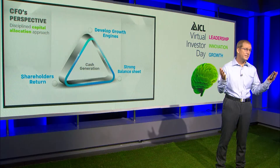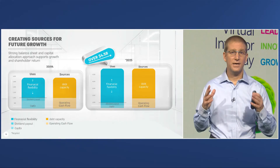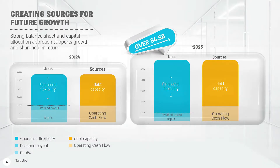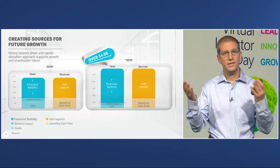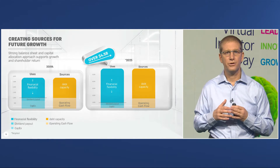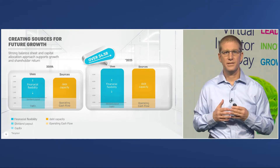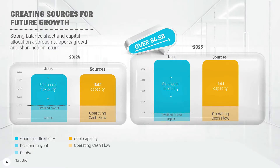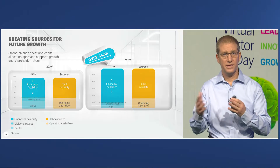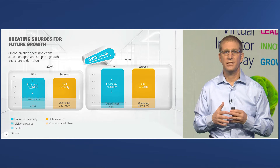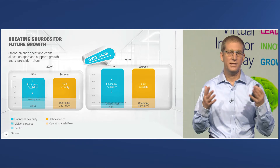To summarize, we are optimizing between the three angles of the triangle, and we will continue with this balanced approach. The sources of funding are the cash flow generation from ongoing operations and our debt capacity under the investment-grade midpoint framework. The uses of funds go to capex investment, dividend payout, and the balance represents our financial flexibility in allocating capital.